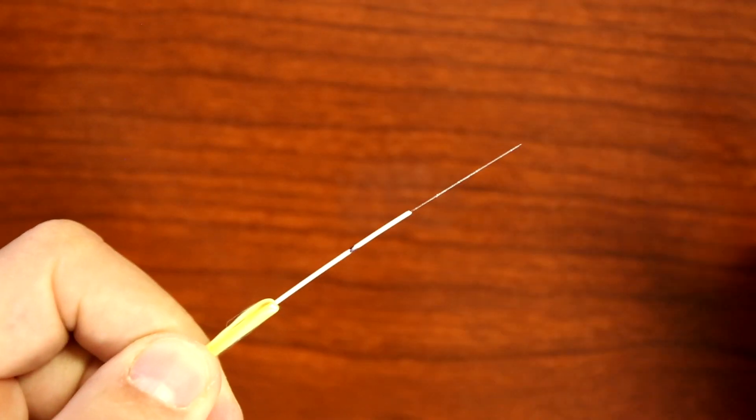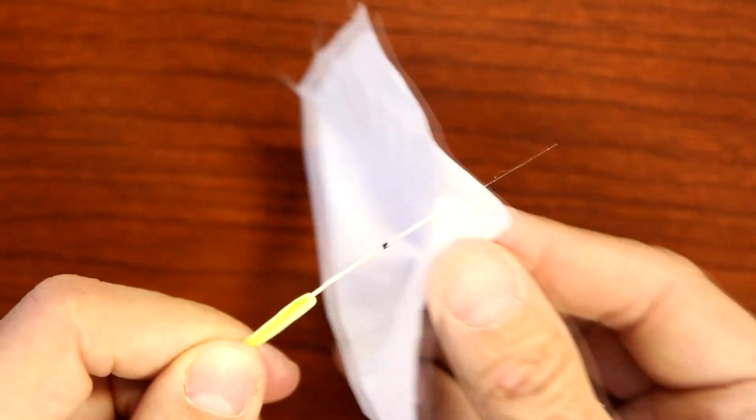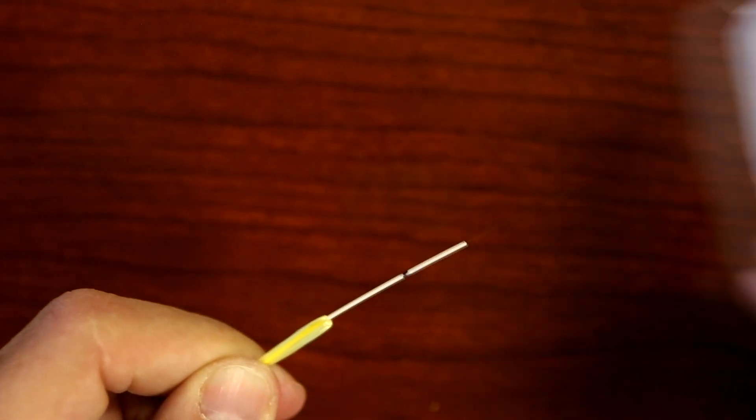Now strip off 25mm of the buffer and coating. Clean the stripped fiber to remove any coating elements.